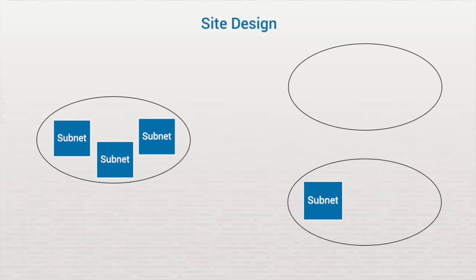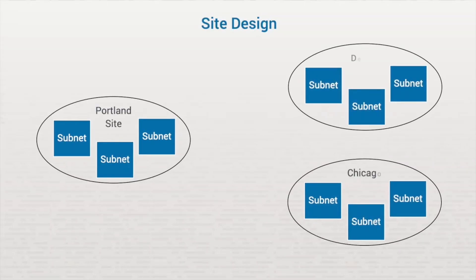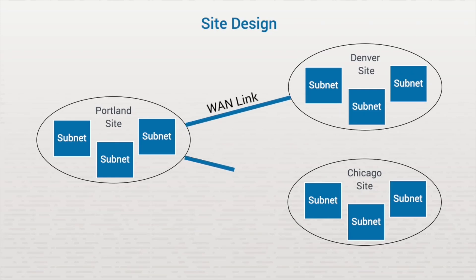Sites are set up to mirror the physical environment. A site is a group of resources in the same physical location, and sites are typically separated by a WAN link. Here we have physical offices in Portland, Denver, and Chicago. Each of these locations are connected through a WAN link, and each location has been set up as an Active Directory site.